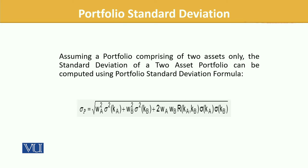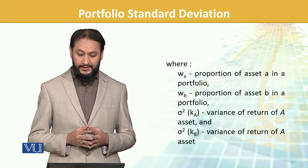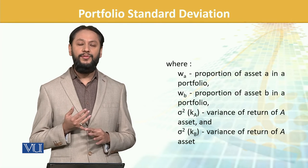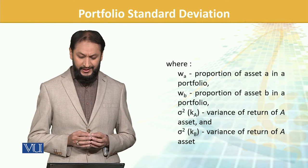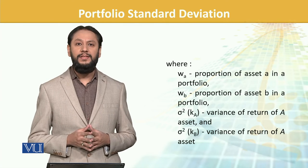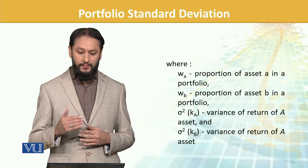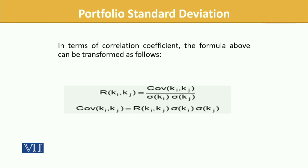If you see, there are mainly three components. We will see the interpretation as well: the first part, the second part, and then the third part. W stands for the weights of the assets in the portfolio, then the variance of the individual assets — if you have to incorporate their variances. And the next part is about the covariance.